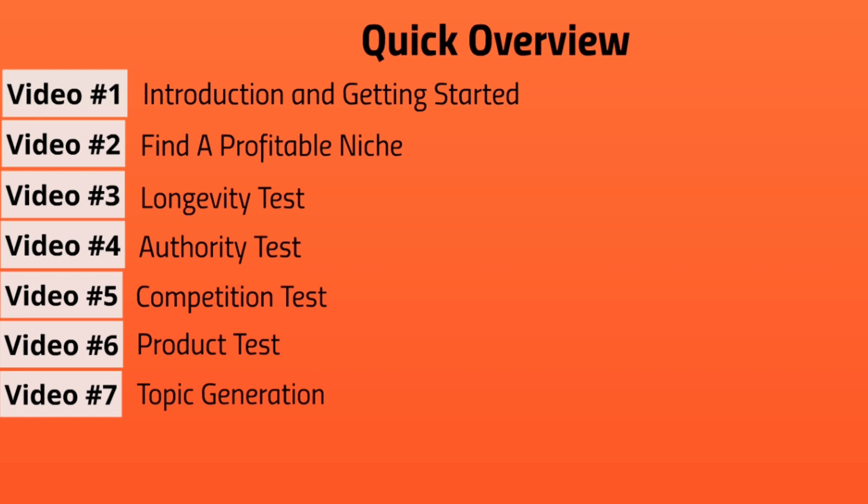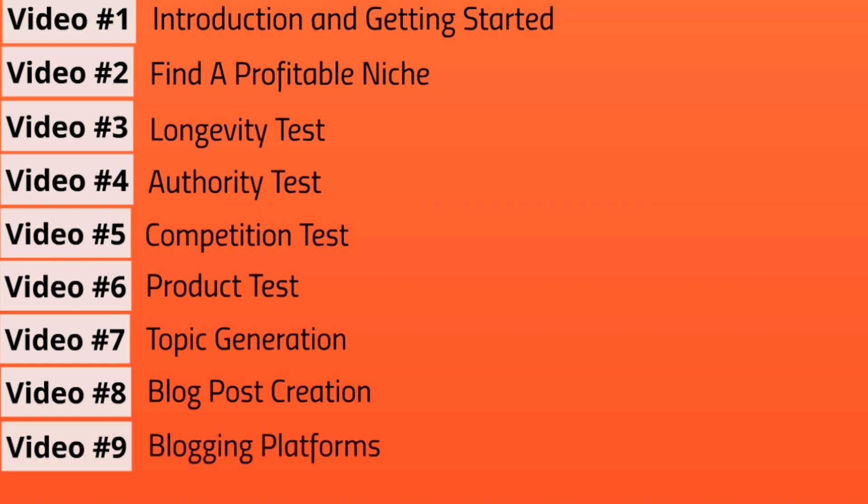The worst case scenario is you jump into a niche that has high demand but isn't necessarily profitable. Video number seven is topic generation — I'll show you how to use free tools to gather intelligence and figure out what topics are in demand. Video number eight covers blog post creation, and video number nine covers blogging platforms. You'll notice that videos one through eight are all about strategy and planning before you set up your blog and think about software tools. With that said, let's move on to video number two.